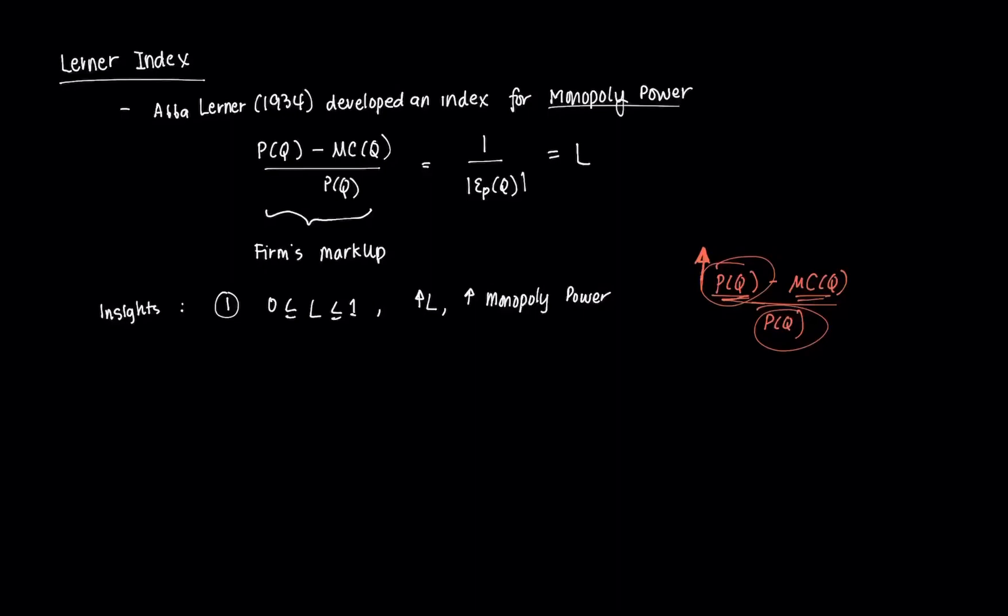When the index is equal to 1, that represents very pure monopoly. If it's equal to 0, then it represents a perfectly competitive market. I'll illustrate that.